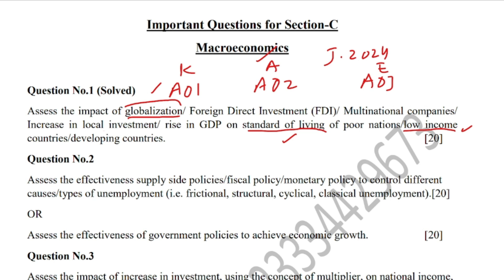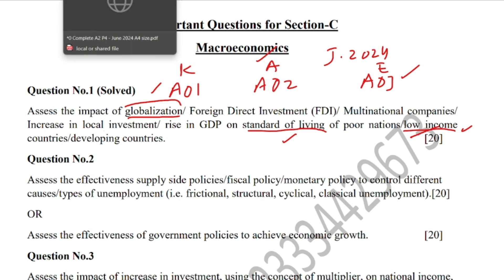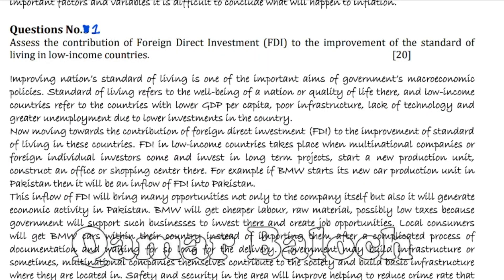On the other hand, you also need to write against this analysis — this is called evaluation. During evaluation, you may argue that globalization may actually harm the standard of living of low-income countries, and you give a judgment for that. Your evaluation must end with a final conclusion or judgment. Let me now show you the exact answer to this question.